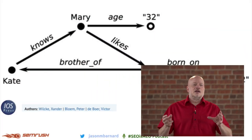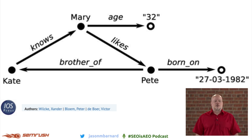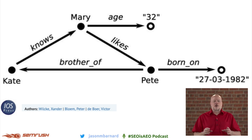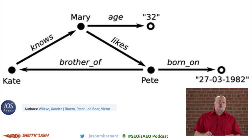How does it work? It's really simple: entities and relationships. Here's a simple example. Mary knows Kate. Mary likes Pete. Pete is the brother of Kate. Pete was born on the 27th of March, 1982.